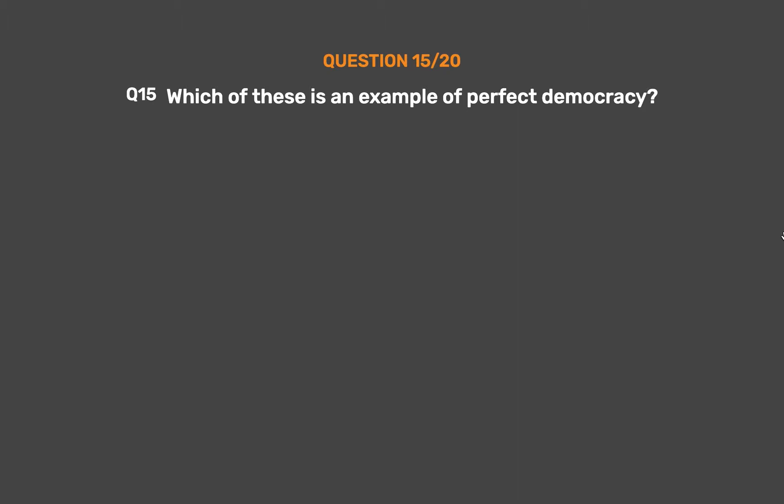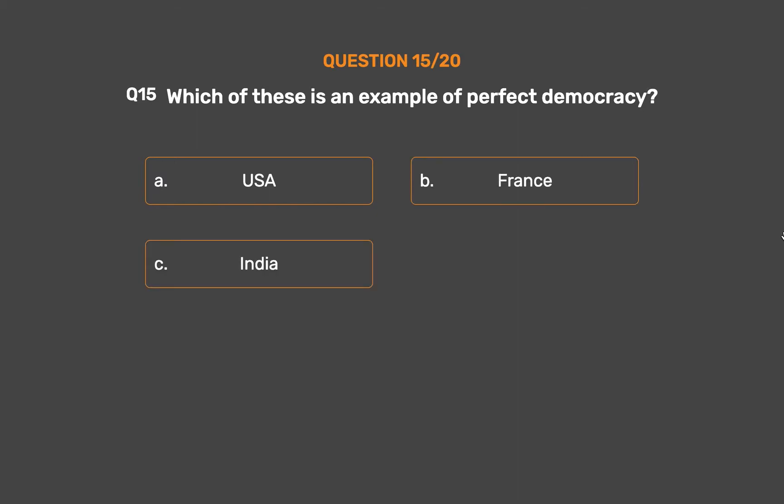Question number 15. Which of these is an example of perfect democracy? Option A: USA. Option B: France. Option C: India. Option D: None of the above.